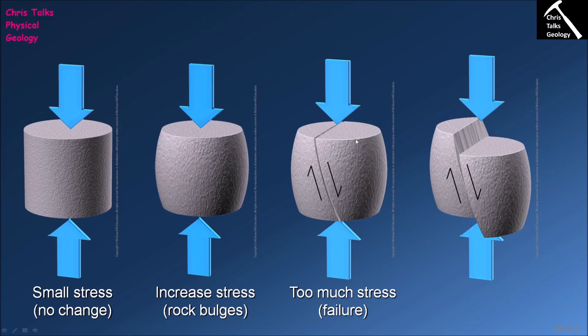As more pressure is applied, this added pressure starts forcing the blocks of rock to move relative to each other — they begin slipping past each other. When this slip process begins, one block is moving relative to another, and so we have transitioned from a joint: our fracture is now classified as a fault. Thank you for watching everybody and have a good day.